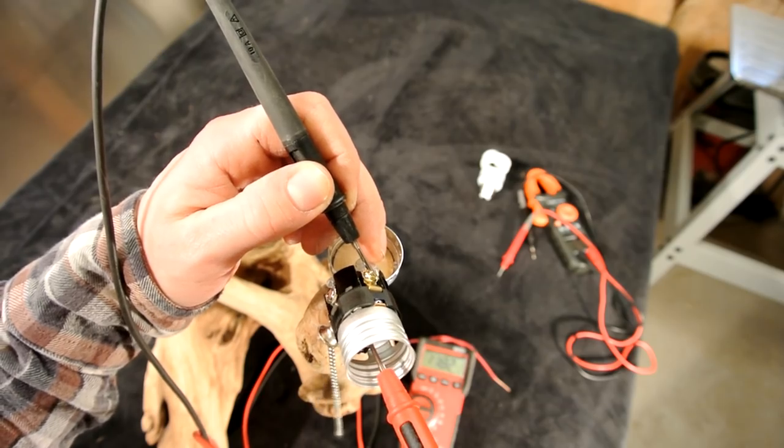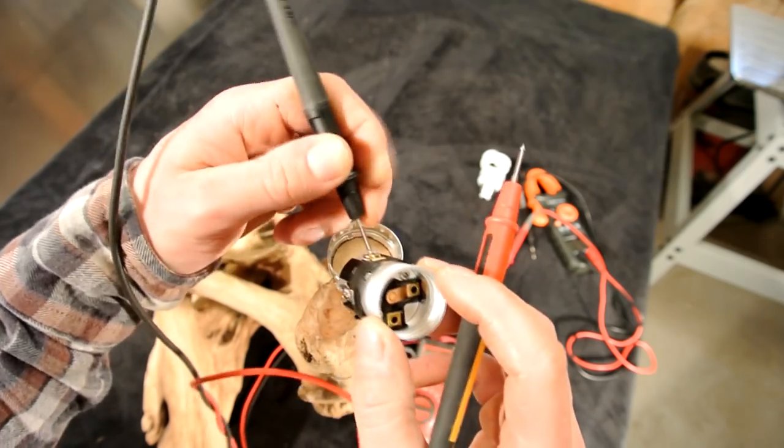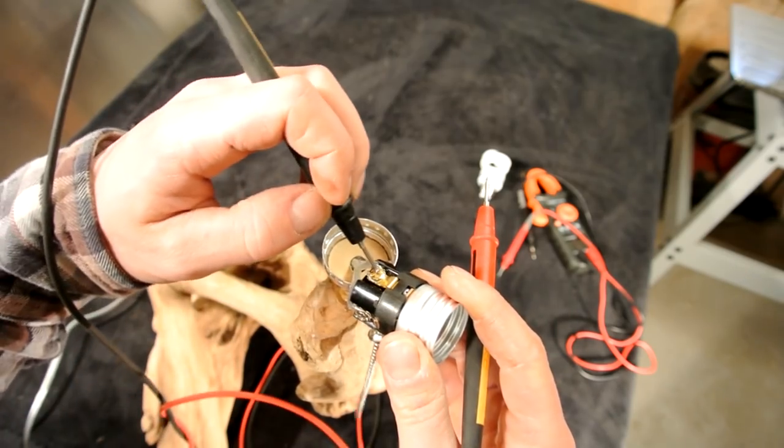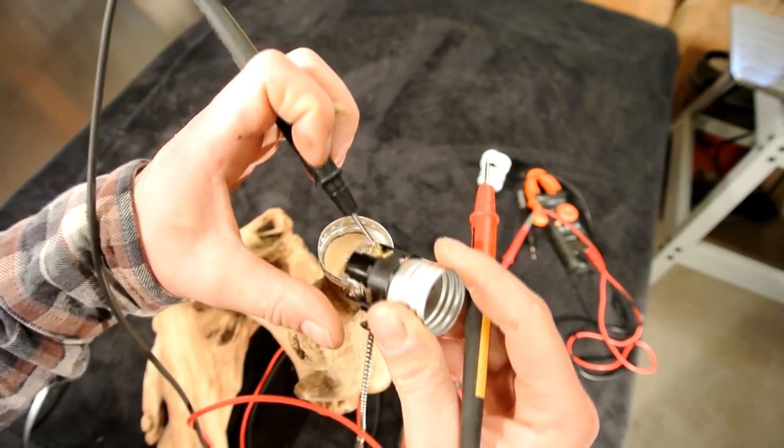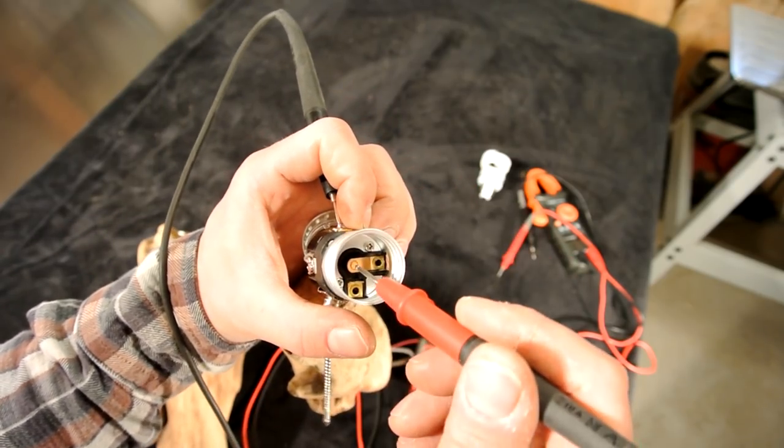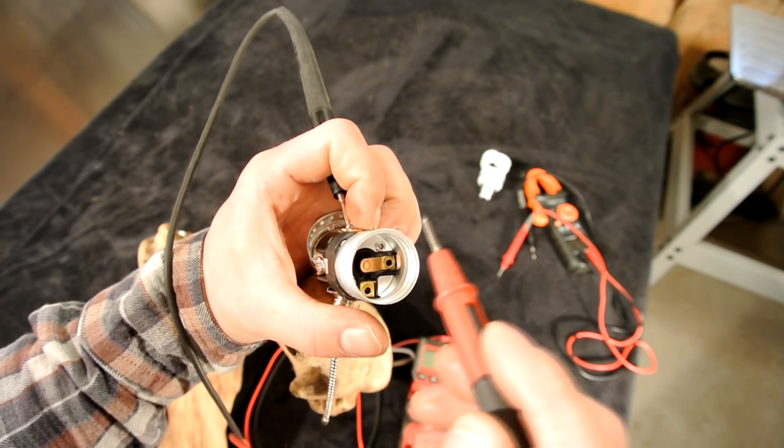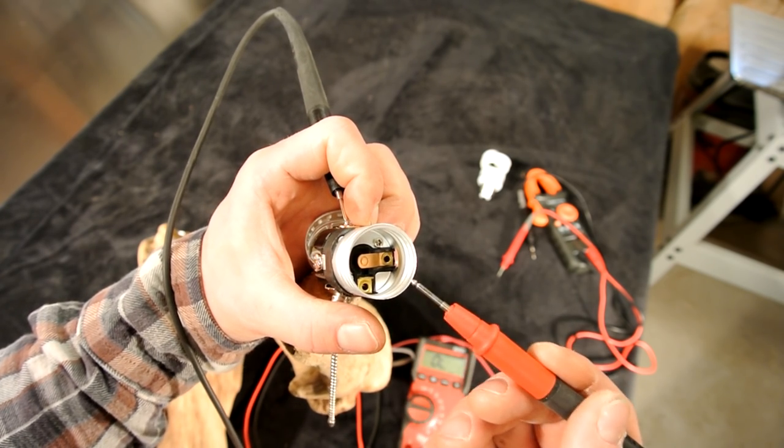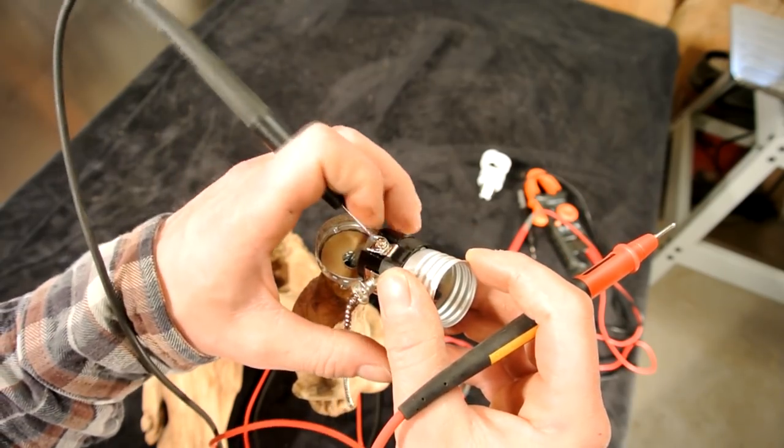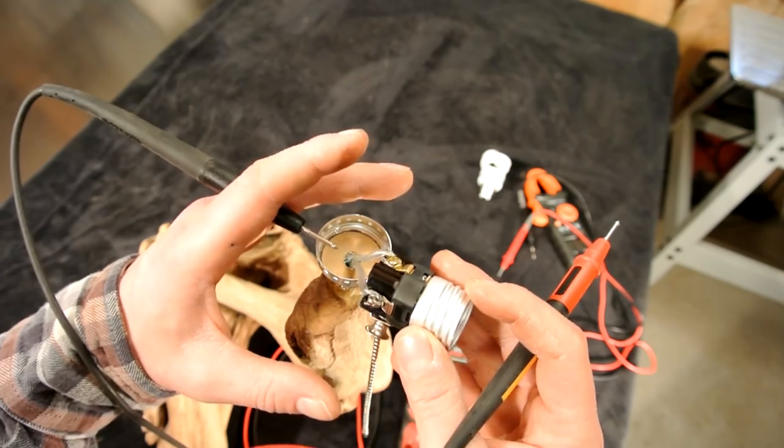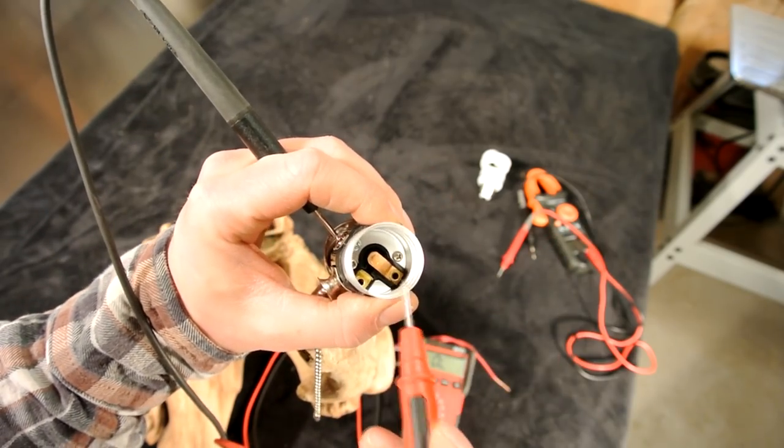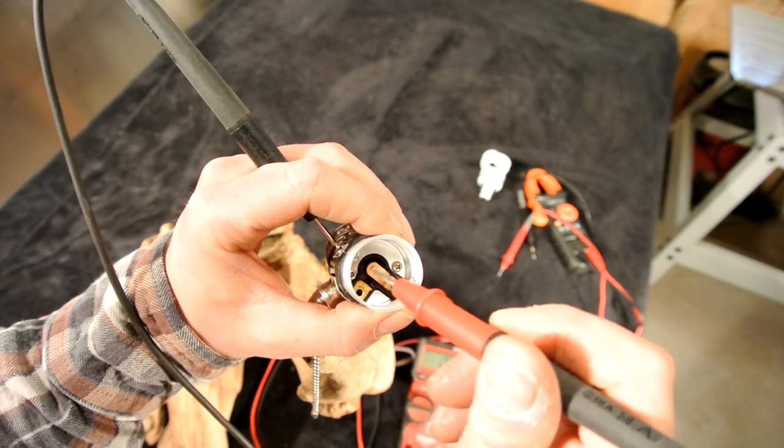As you can see, I have one of my probes on the gold screw and I'll put the other probe on the center pin inside the actual light. When I touch the outside you'll notice you don't hear a beep, so that means the circuit isn't completed.